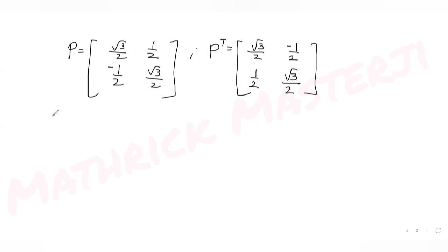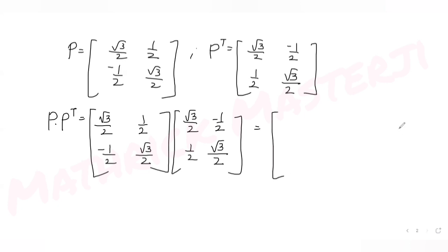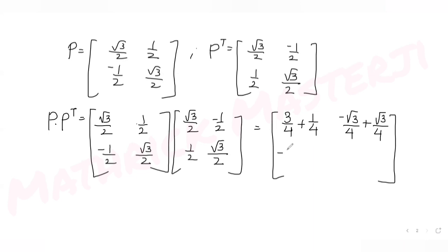Taking the product of P and Pᵀ: (√3/2)·(√3/2) = 3/4, (1/2)·(1/2) = 1/4 → sum = 1. For the off-diagonal: (√3/2)·(-1/2) = -√3/4, (1/2)·(√3/2) = √3/4 → sum = 0. Similarly the other off-diagonal sums to 0, and the last diagonal element: (-1/2)·(-1/2) + (√3/2)·(√3/2) = 1/4 + 3/4 = 1.